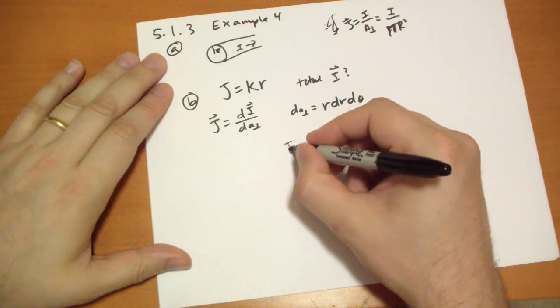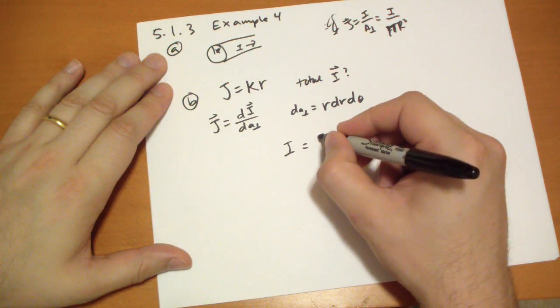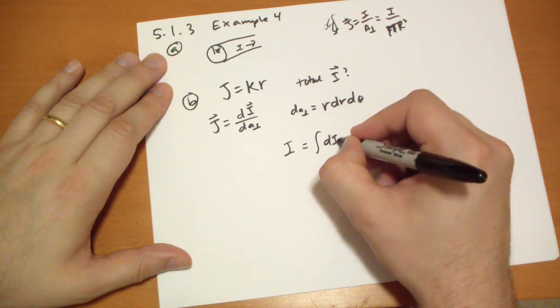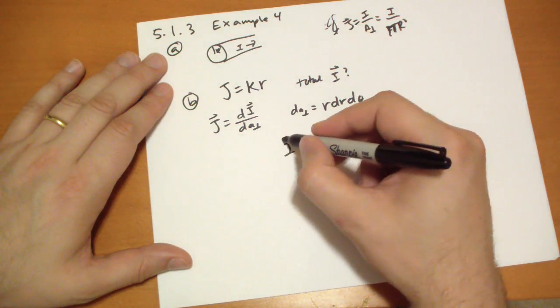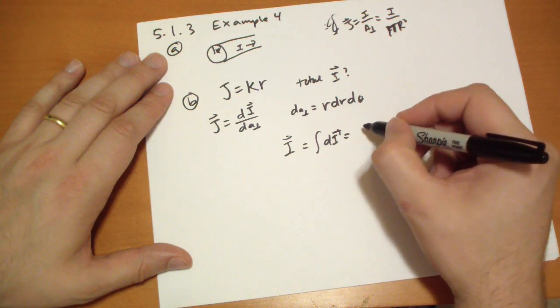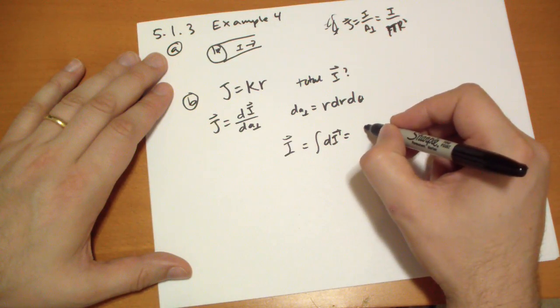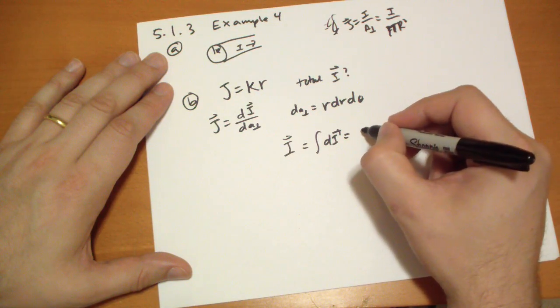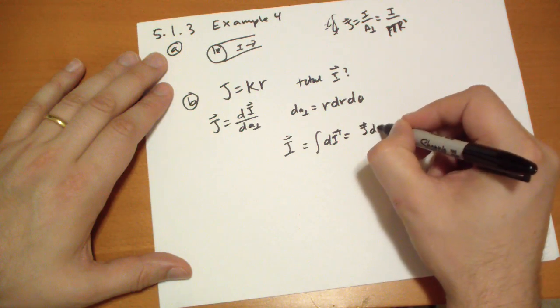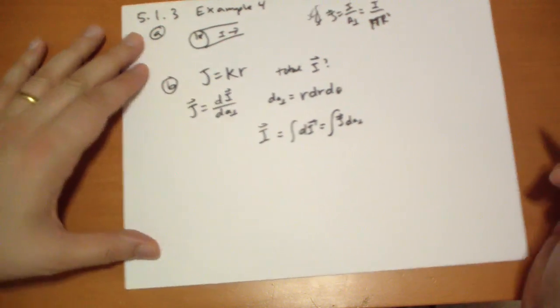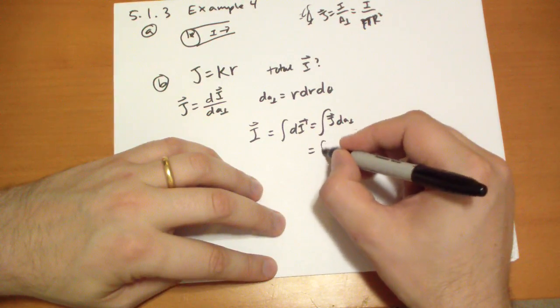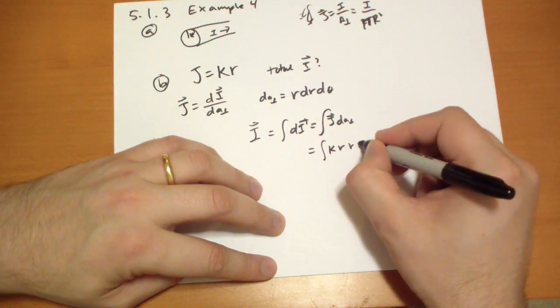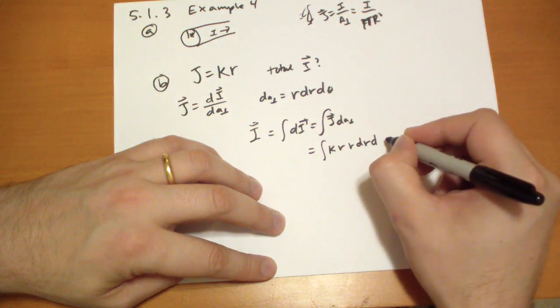So we have I, the total I, is equal to, well, the integral dI vector. I vector which is equal to, well, I doesn't change direction so I kind of want, let's do that. Is equal to J, the A perpendicular to the integral of that across the surface. So we have, well, J is KR, R dR, dθ.